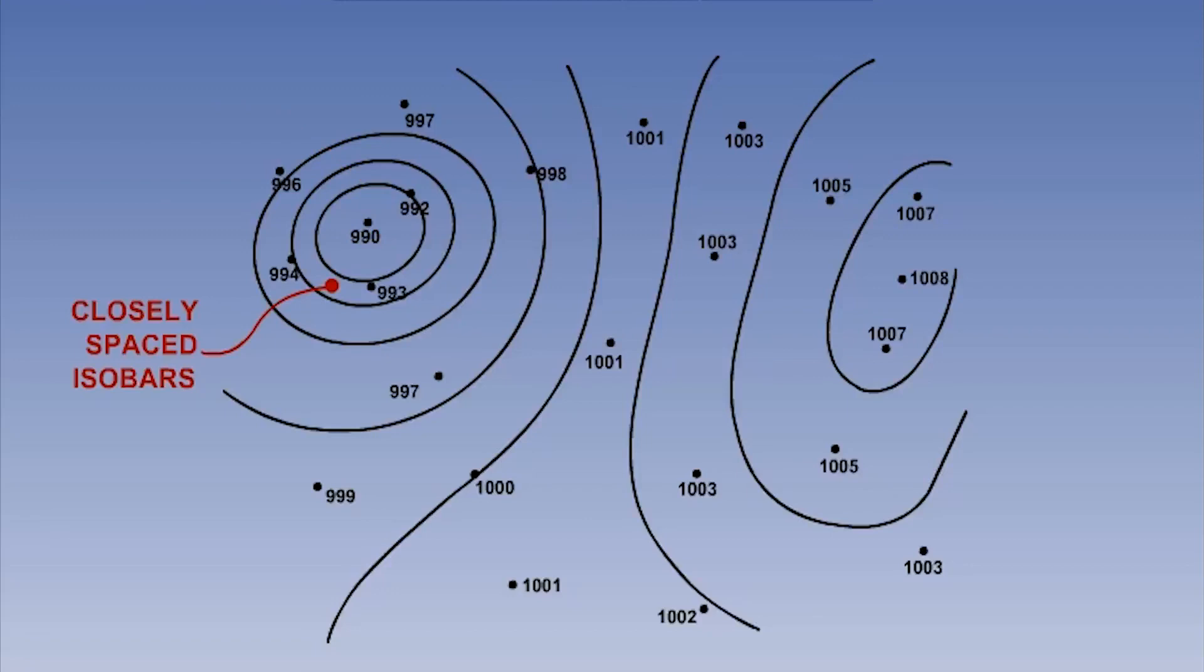Note, though, that the spacing between the isobars in the low can be smaller than those found around high pressures. This means that the pressure gradient, or the change in pressure with distance, can be greater within a low pressure system than in a high pressure system.